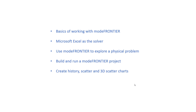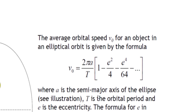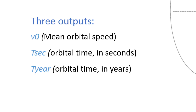The problem is a physical problem from astrophysics. The orbital average speed V0 of an object in elliptical orbit is given by a formula. We have two input parameters: A, the semi-major axis of the orbital orbit, and ECC, the orbital eccentricity. We want to vary these parameters and observe the effect on three output parameters: V0 (mean orbital speed) and two orbital times, TSEC (in seconds) and TYEAR (in years).